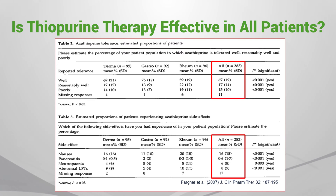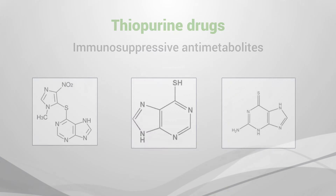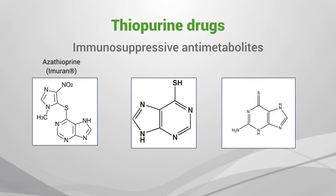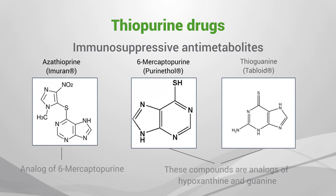Bone marrow toxicity can occur in four to eight percent of patients on azathioprine and 6-mercaptopurine therapy. Thiopurine drugs consist of azathioprine, 6-mercaptopurine, and thioguanine.